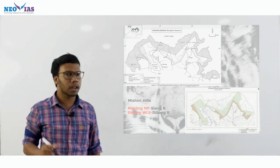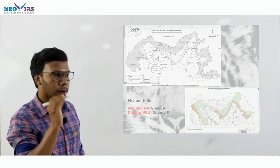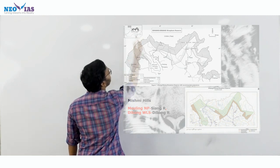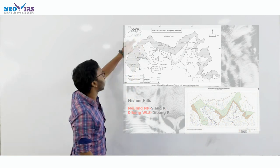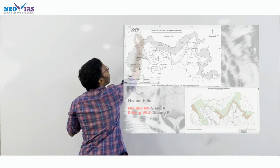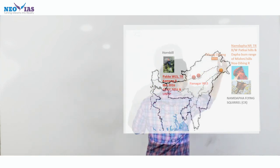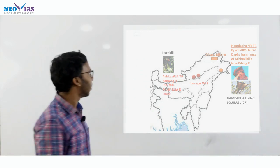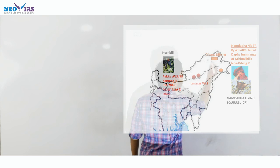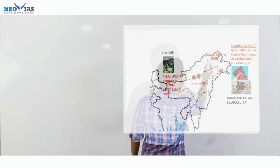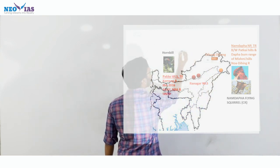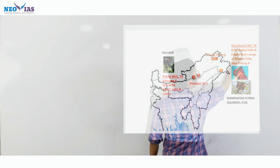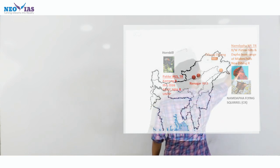There are two cores for this Dibang Biosphere Reserve. You can mark Dibang Biosphere Reserve in Arunachal Pradesh like this. And here, you can mark two cores: this one will be Mowling National Park, and here we will be having Dibang Wildlife Sanctuary.